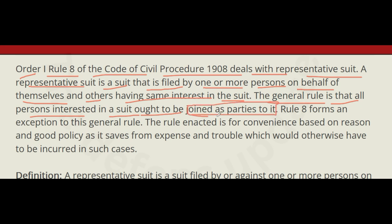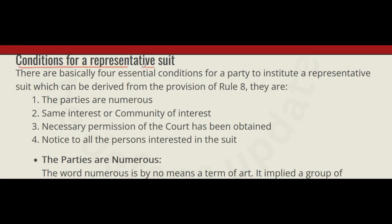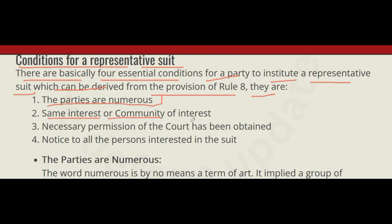The general rule is that all persons interested in a suit ought to be joined as parties to it. There are four essential conditions for a party to institute a representative suit derived from Order 1 Rule 8: the parties are numerous; same interest or community of interest; necessary permission of court has been obtained; and notice to all persons interested in the suit, which will be met when the court orders that notice be given to all parties.